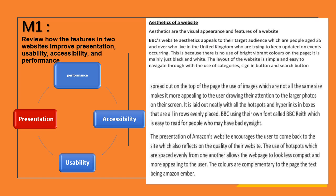For M1, you need four sections: presentation, performance, accessibility, and usability. On the presentation section, we will have aesthetics. Aesthetics are the different features in terms of what you see on the website — how it looks, the layout, the colour scheme, the theme. You want to look at how Amazon and BBC have improved their presentation to entice and engage customers to their content.